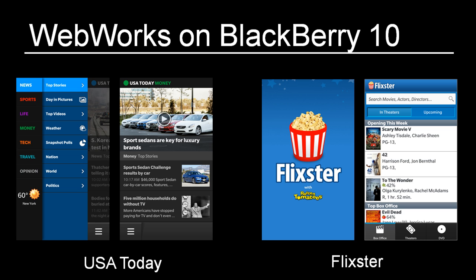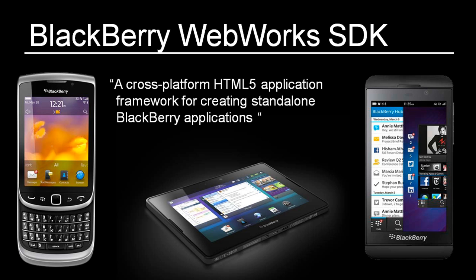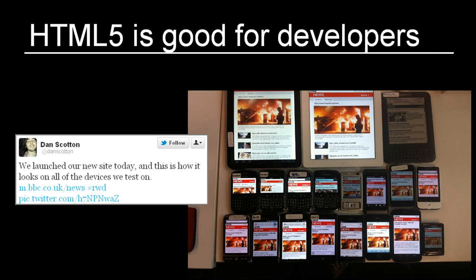So, how did vendors like USA Today and Flixster create these applications? They packaged them using a tool called the BlackBerry WebWorks SDK. BlackBerry WebWorks is simply the name of an application framework that is used to package web content into a standalone BlackBerry application. This approach to mobile development is a hybrid model between web and native. Using this hybrid model, developers can easily reuse existing web assets when building their native applications on BlackBerry. In fact, code reuse is an extremely valuable benefit for many developers interested in supporting multiple platforms.